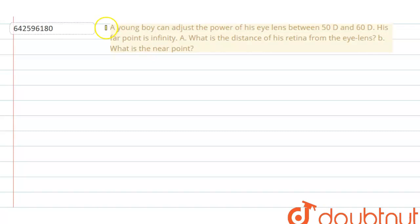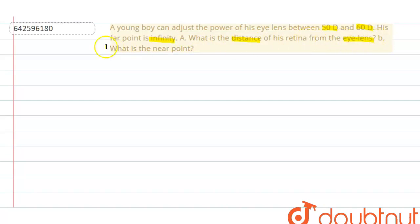The question says that a young boy can adjust the power of his eye lens between 50 diopter and 60 diopter. His far point is infinity. In part A we are asked what is the distance of his retina from the lens, and in part B it is asked what is the near point.